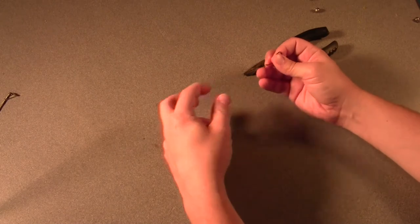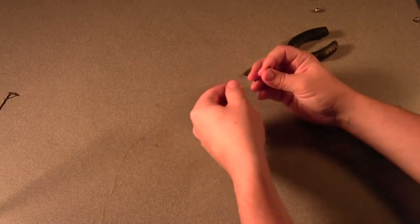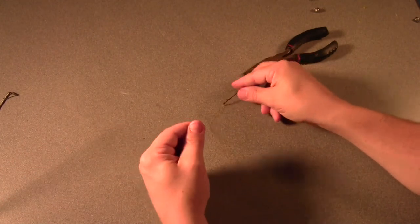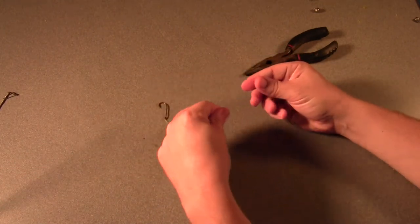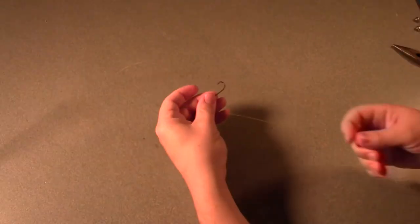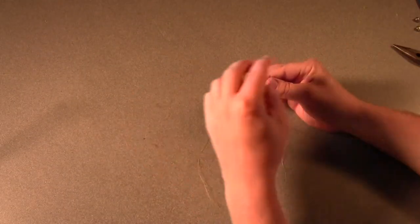So basically what I have now is I have the hook tied to the line, and I have a tag end that's about 18 inches long. And so at the end of that line is where I'm going to put the sinker. Now before you put the sinker on, there's one last thing you should do.